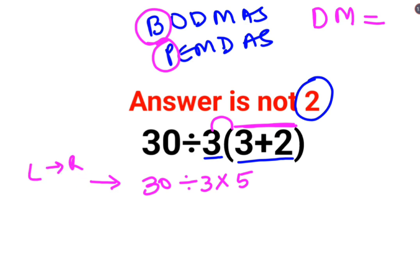Whatever operation happens first on your left hand side has to be done first. So 30 divided by 3 which is 10 multiplied by 5. So answer for this question is supposed to be 50.